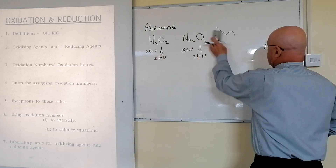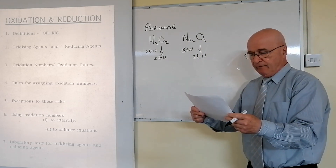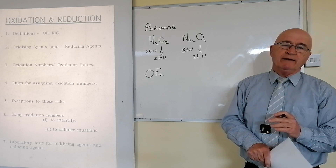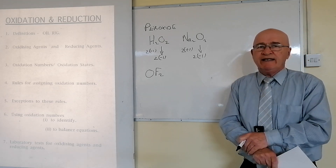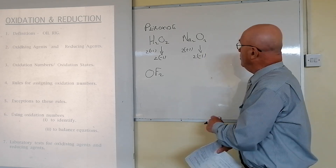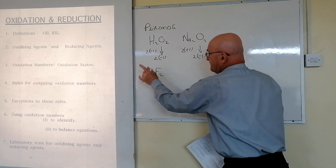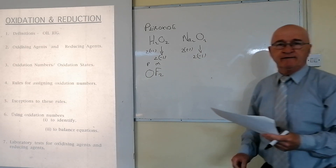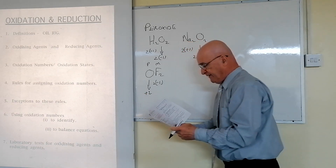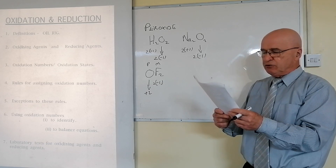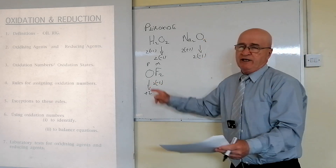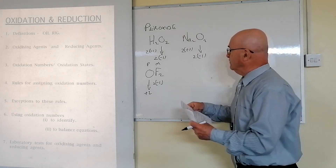The second exception is the compound oxyfluoride, OF₂. Fluorine is the most electronegative element in the periodic table — it's the only element more electronegative than oxygen. We're used to finding oxygen as the negative part, but in OF₂, fluorine is minus one twice, therefore oxygen must be plus two. So in OF₂, oxygen is plus two, not minus two.